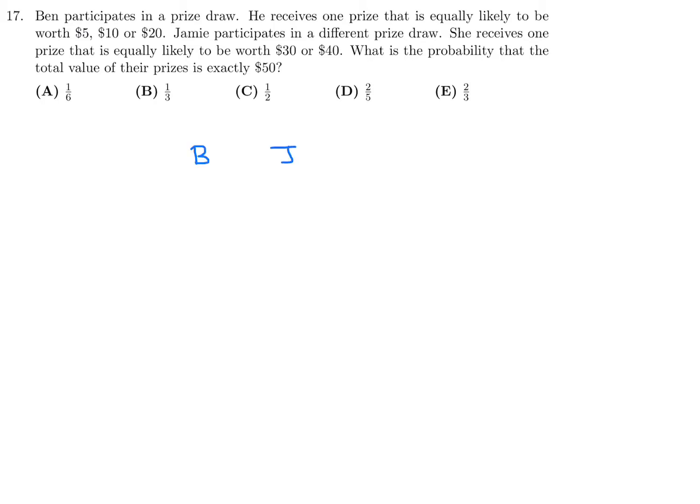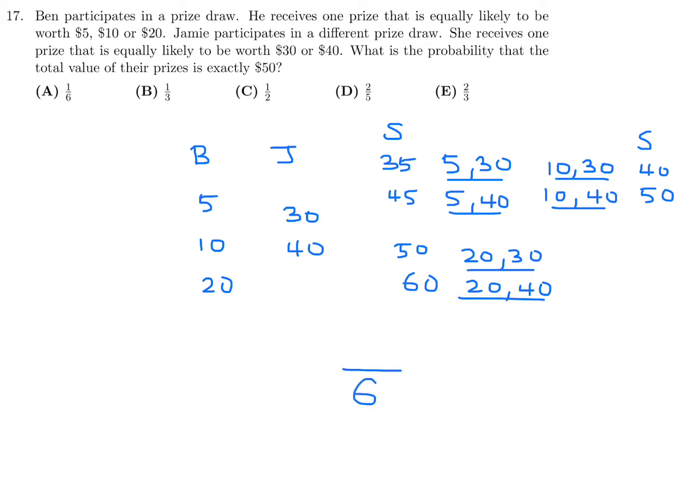Ben and Jamie, 5, 10, and 20, 30 and 40. The combinations would be 5 and 30, 5 and 40, 10 and 30, 10 and 40, or 20 and 30, and 20 and 40. Now, let's add them up, the sums. The sums would be 35, 45, this sum is 40, this sum is 50, this sum is 50, and this sum is 60. So of the 6 possible ways of getting a sum, 50 happens twice. So 2 out of the 6 or 1 out of 3. Number 17, the answer is B.